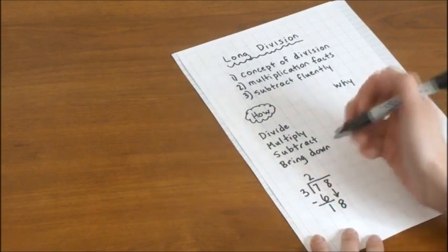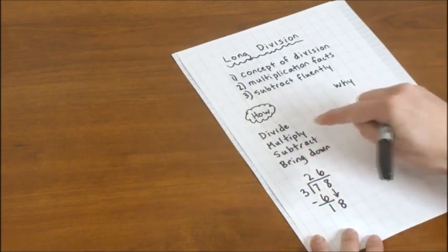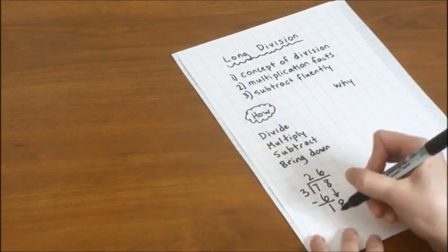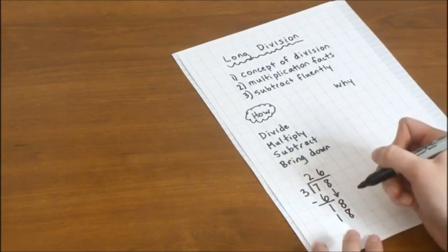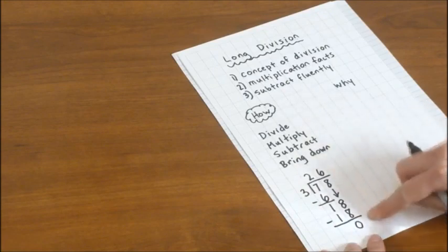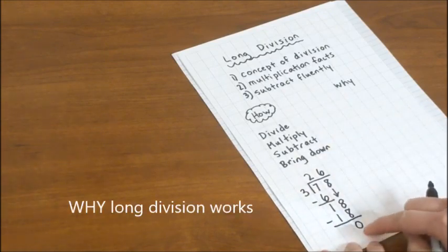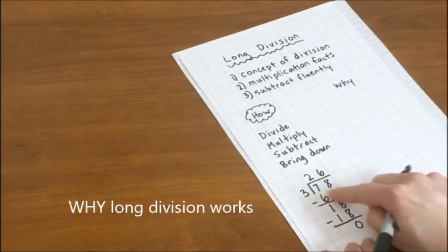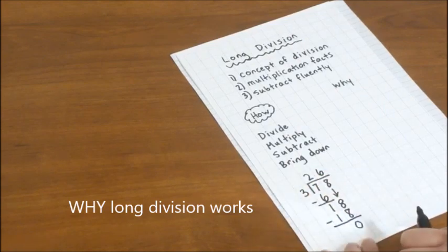First we divide. So 18 divided by 3 equals 6. Multiply. 6 times 3 equals 18. We subtract. 18 minus 18 equals 0. And there's nothing left to bring down. And we've discovered that there's nothing left over. The 78 divided by 3 equals 26.